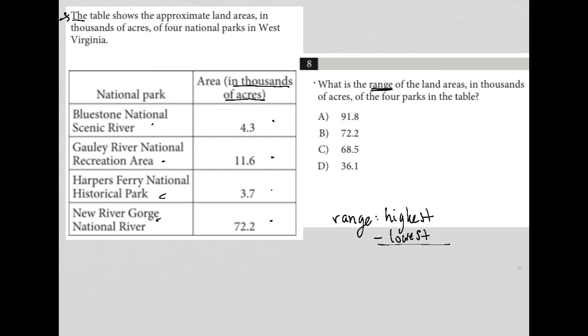We're going to very literally just find what is the highest, what's the largest area national park that we have on our table. And that number is 72.2, again, in thousands of acres.